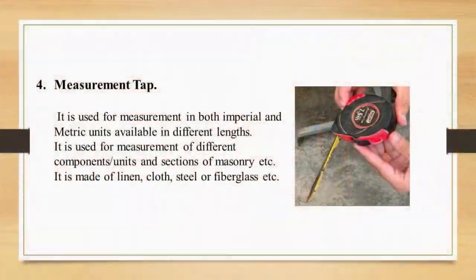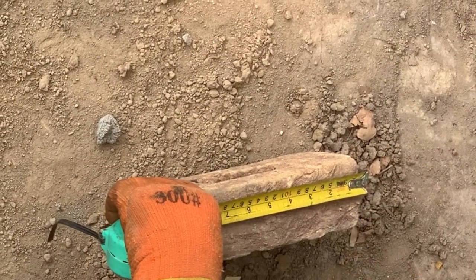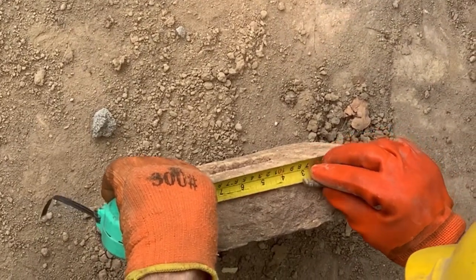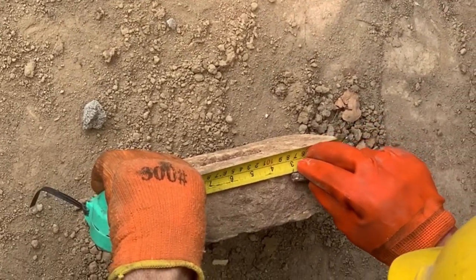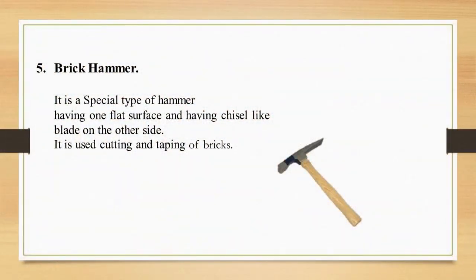The fourth tool is the measuring tape. It is used for measurements in both imperial and metric units and is available in different lengths. It is used for measuring different components, units, and sections of masonry. It may be made of linen, cloth, steel, or fiberglass. In this video you can see we are making use of the measuring tape in order to cut a brick.